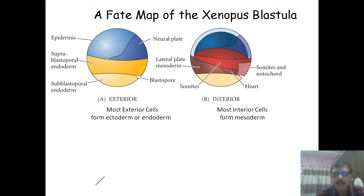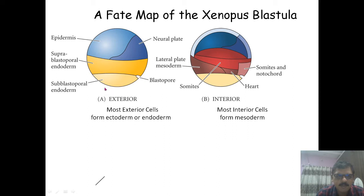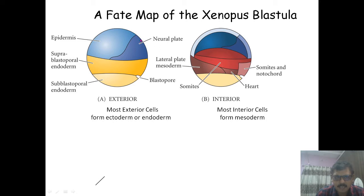This is the fate map of the Xenopus blastula or the frog blastula. This is the blastopore, and this region towards the vegetal pole has the endodermal area — this is the sub-blastoporal endoderm, which is the area below the blastopore. This is the supra-blastoporal endoderm, which is above the blastopore. This is the neural plate region and this is the epidermal region.